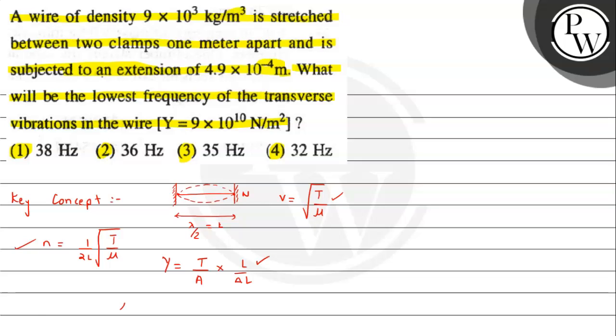These are the few important results we need to keep in mind. Take μ, that is mass per unit length. We can say ρ into density, mass is ρ × volume upon L. Volume can further be written as area of cross section × length. Finally, we can say ρ × A. These are few important things we need to be clear with.